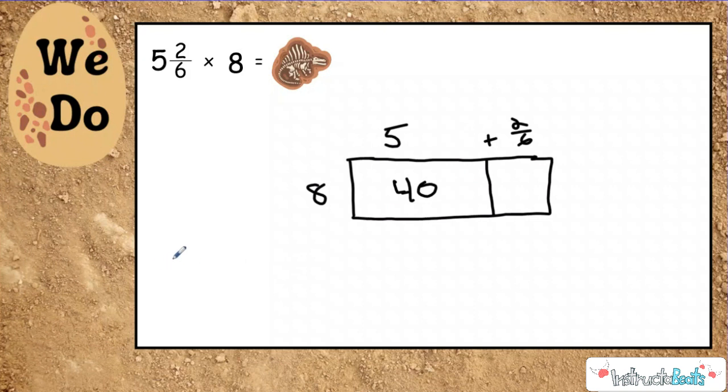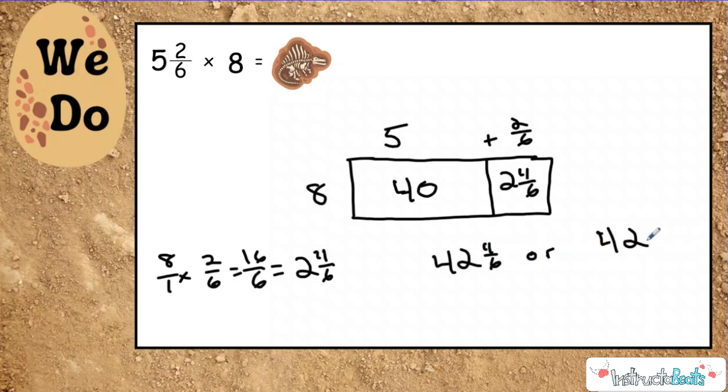8 times 2/6. If I just put that over 1 and multiply across, I get 16/6. So I know my answer should be 40 and 16/6, but this is a mixed number, so let's just go ahead and turn 16/6 into 2 and 4/6. And now I add my partial products together, and I'm going to get 42 and 4/6. Or if I simplify that, that would be 42 wholes and 2/3.